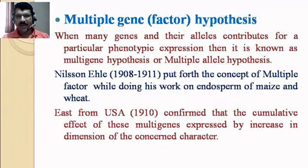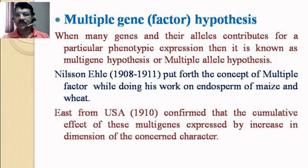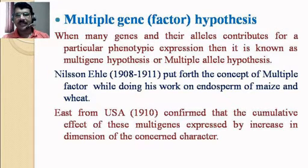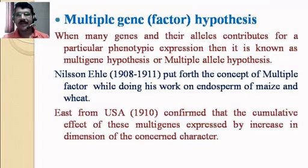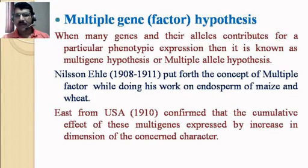Next we will see what is the multiple gene hypothesis, also called the multiple factor hypothesis. It is a straightforward concept: when many genes and their alleles contribute to a particular phenotypic expression, it is known as the multigene hypothesis. For the expression of a particular phenotypic character, multiple genes — more than two — come together. It is estimated that sometimes more than 10 to 100 genes come together to express a particular phenotypic trait.